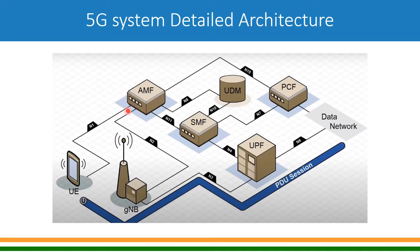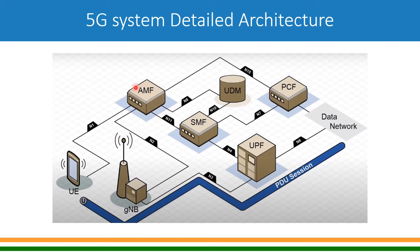AMF, Access and Mobility Function, is the core access and mobility function. The UE connects to AMF on the N1 interface — through G Node B, which transparently passes this interface to AMF. All access authorization and mobility management is done by AMF.